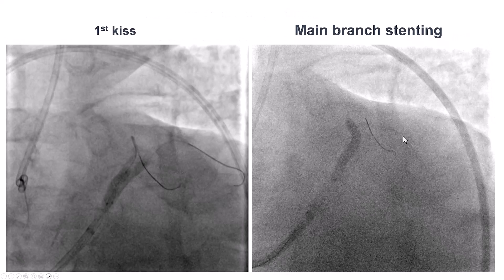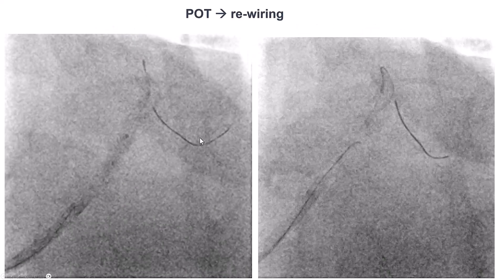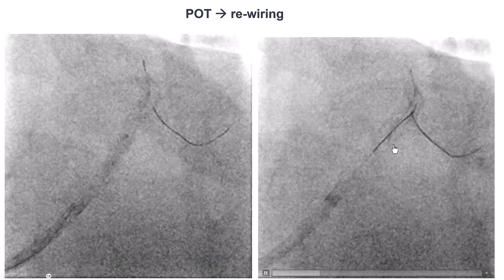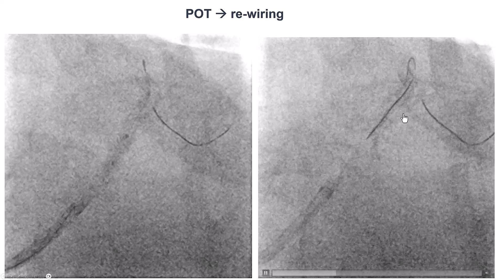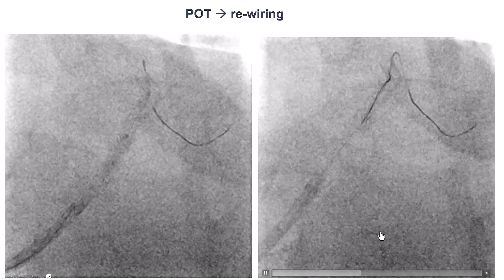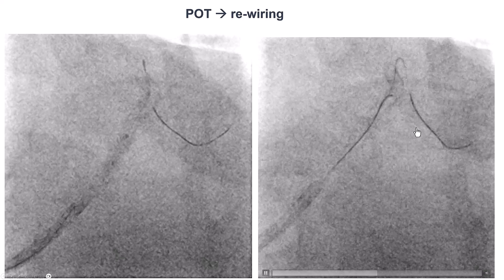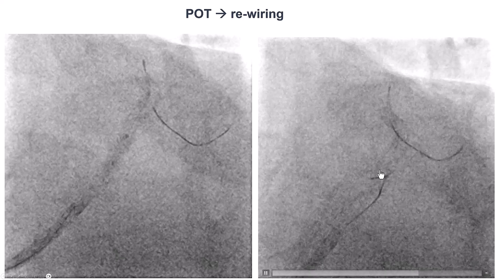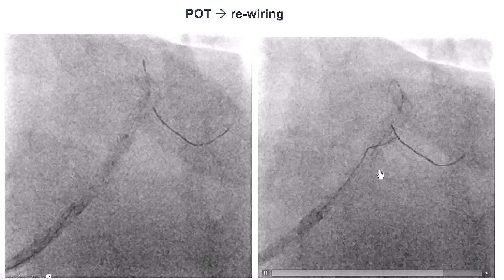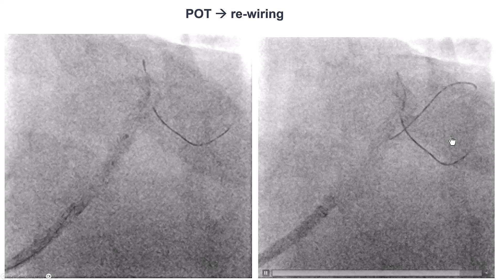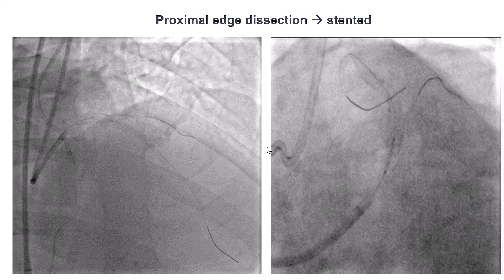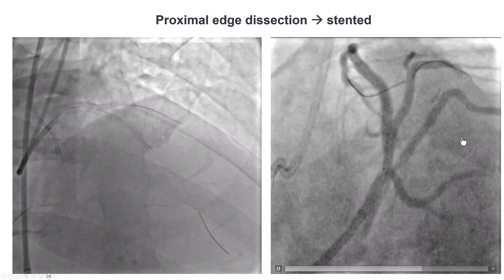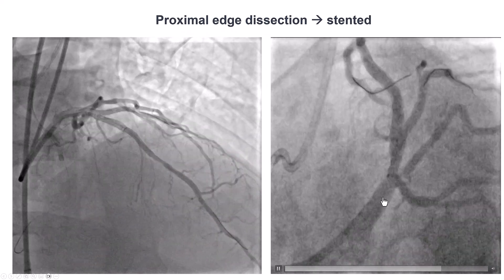We rewired for the first kissing balloon inflation, deployed the stent in the main vessel, performed the proximal optimization technique, then rewired the diagonal branch — which was not too hard even with a workhorse guidewire despite the angulation. After rewiring, we performed the second kissing balloon inflation, then final proximal optimization technique. There was some area of dissection proximal to the stent, so we covered that with an additional drug-eluting stent.